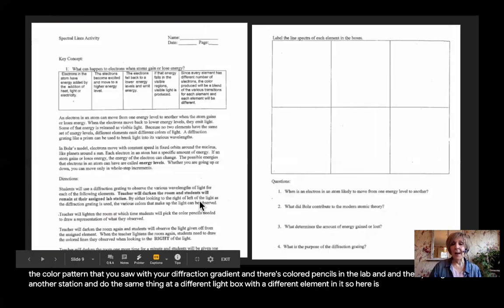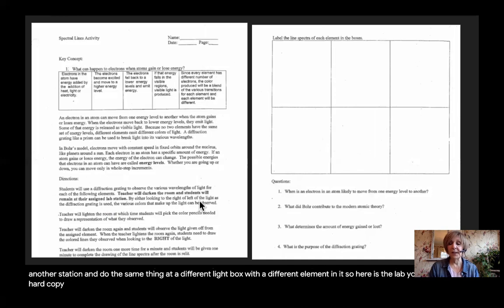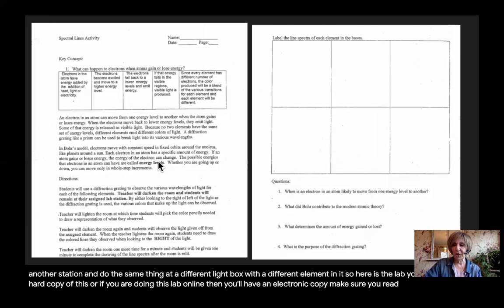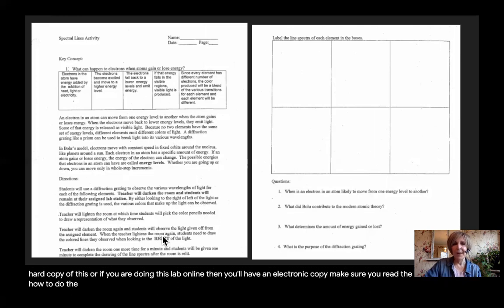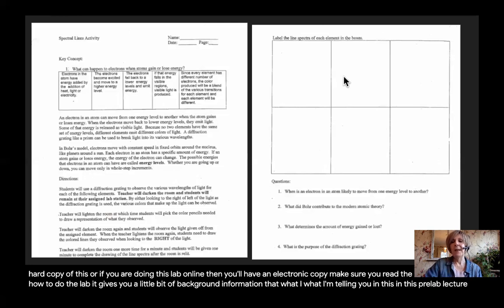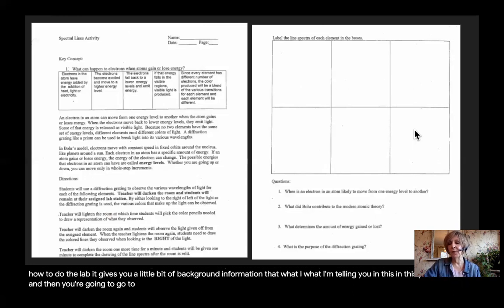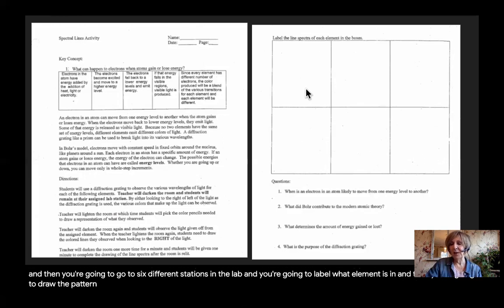So here is the lab. You should have a hard copy of this or if you are doing this lab online then you'll have an electronic copy. Make sure you read the directions about how to do the lab. It gives you a little bit of background information, what I'm telling you in this pre-lab lecture. And then you're going to go to six different stations in the lab and you're going to label what element is in the little skinny light bulb and then you're going to draw the pattern that you see.